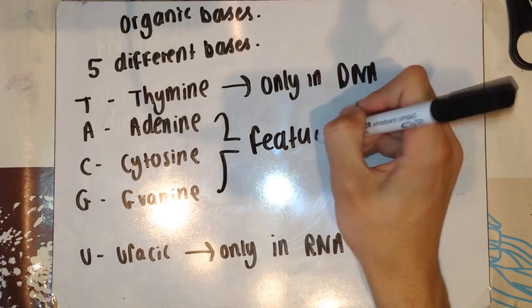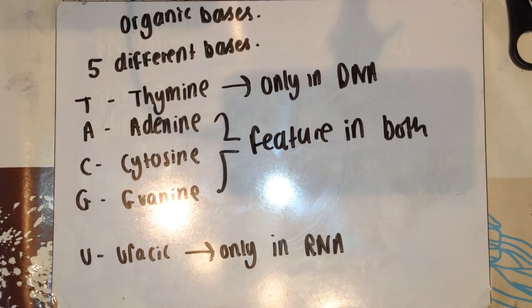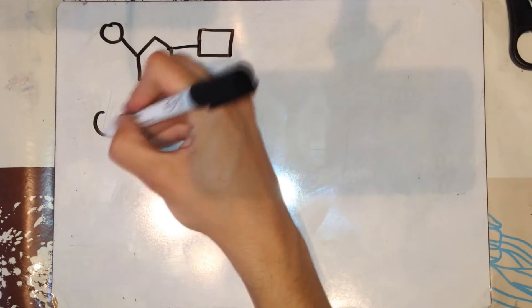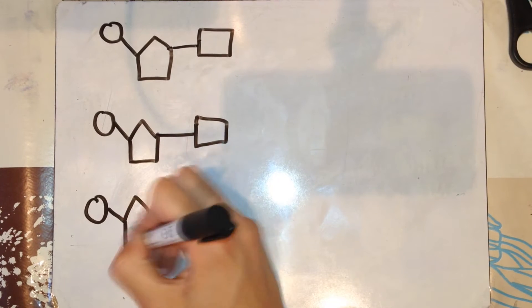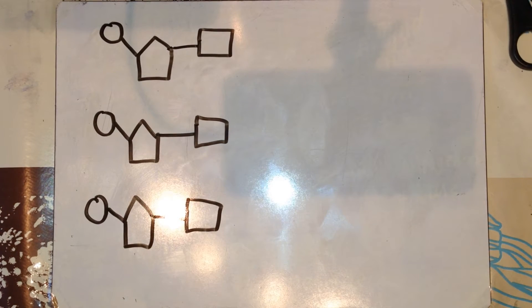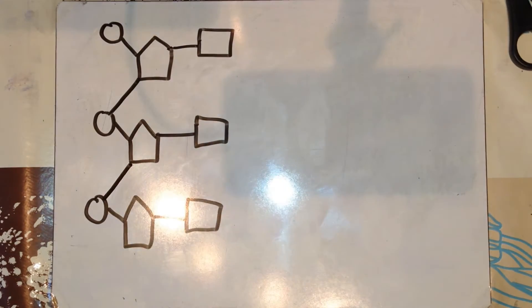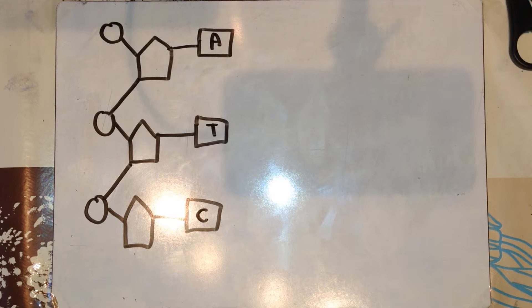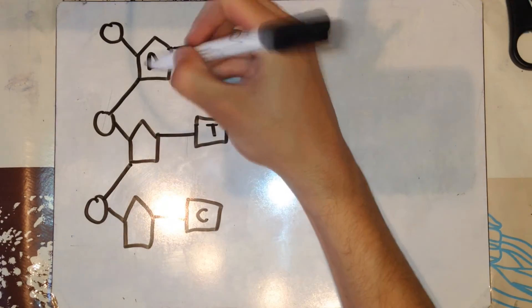Adenine, cytosine, and guanine are found in both. I'm going to quickly draw out some nucleotides and show you how they connect to form the backbone of the DNA. I'm going to label them A, T, and C for adenine, thymine, and cytosine, just to show you the different types of nucleotides you could have in a molecule of DNA. I'm going to put these in the pentose sugars to show that this is in fact DNA, not RNA, as the sugar is deoxyribose.